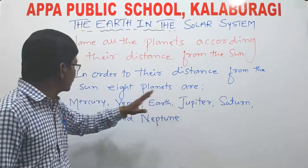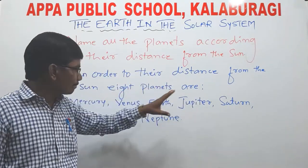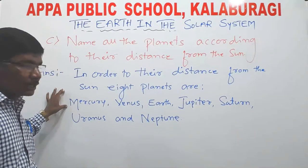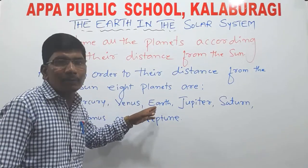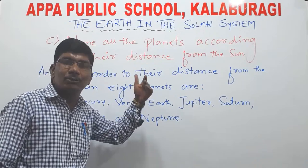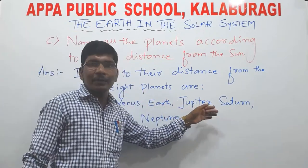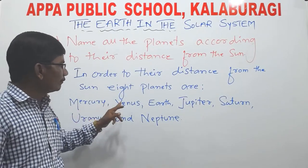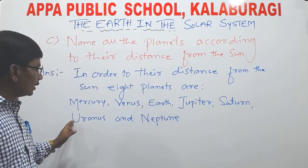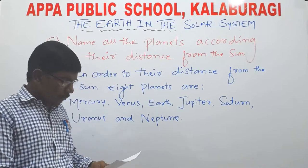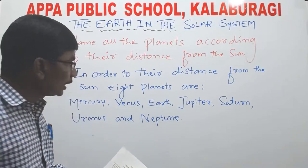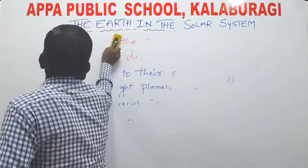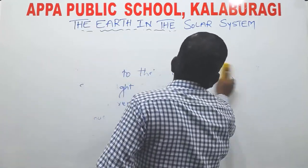Mercury is the first nearest planet to the sun, second is Venus, third is Earth, fourth is Jupiter, fifth is Saturn, then Uranus and Neptune. So the answer is: Mercury, Venus, Earth, Jupiter, Saturn, Uranus and Neptune. The question and the answer are very simple.